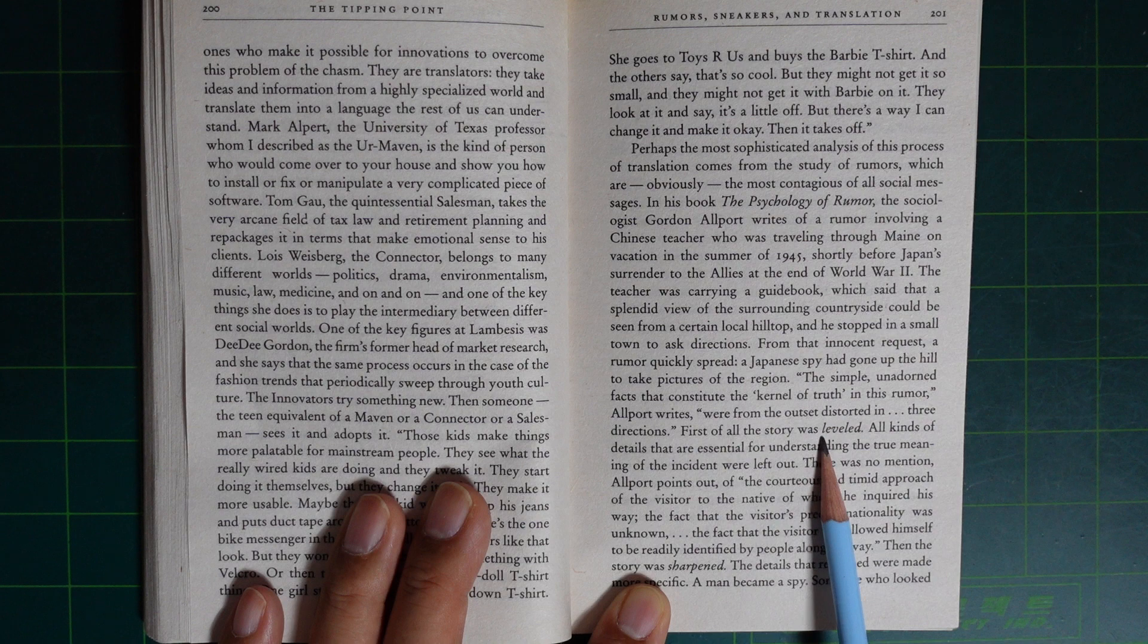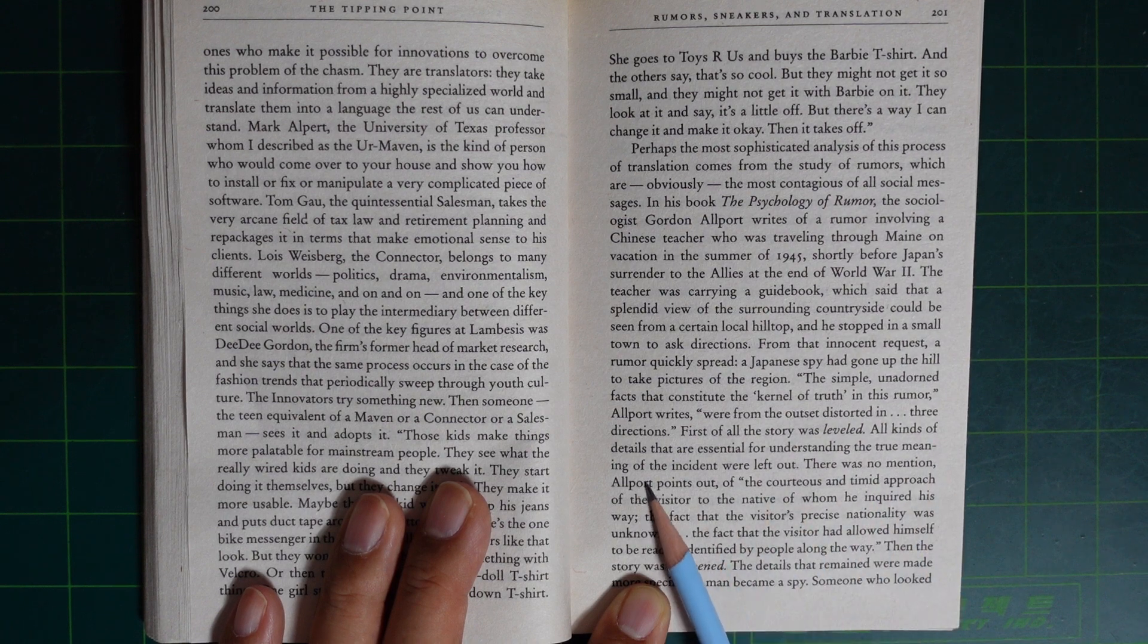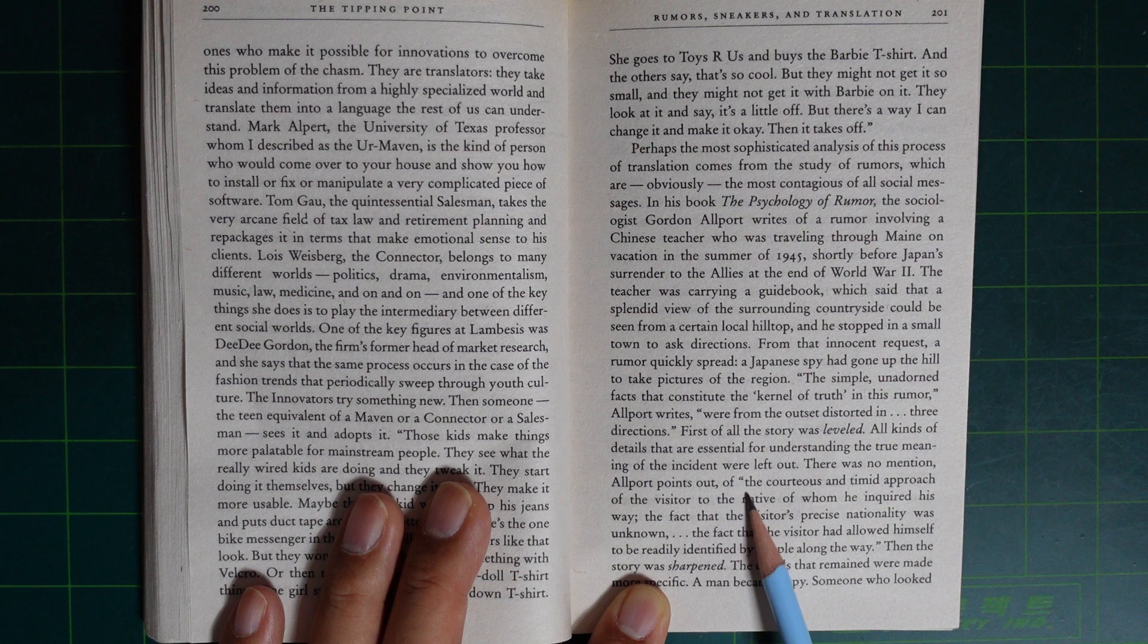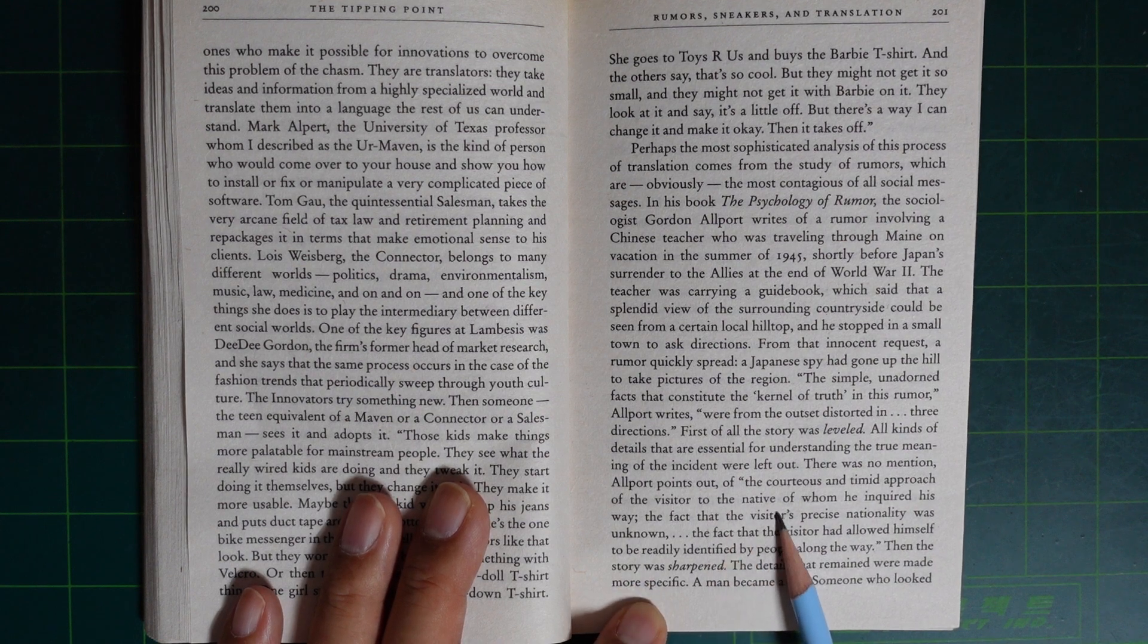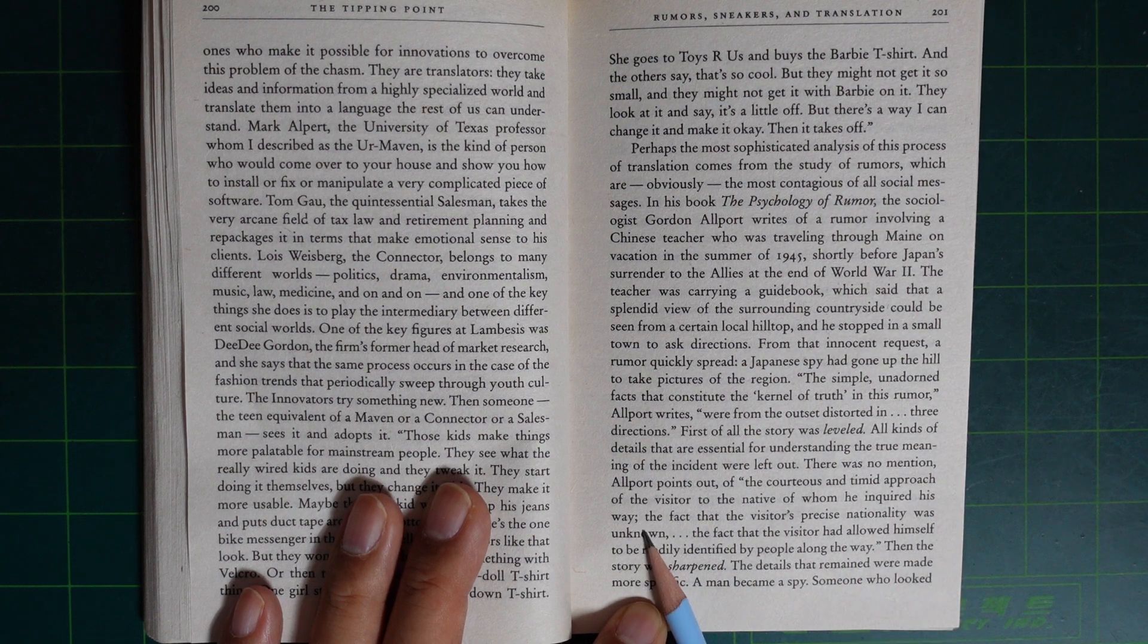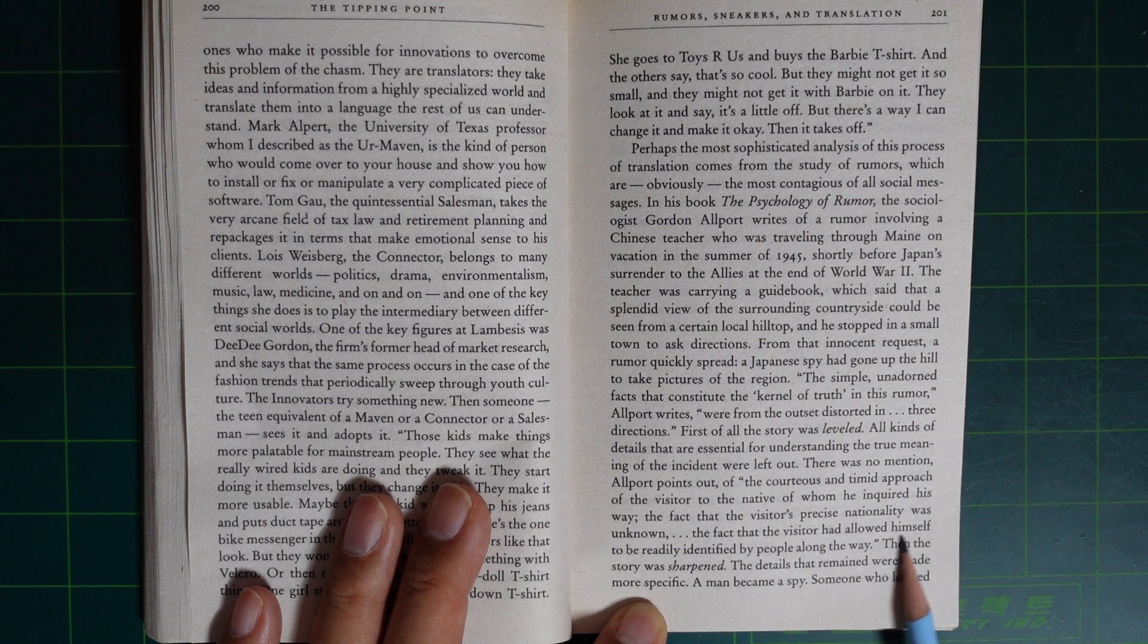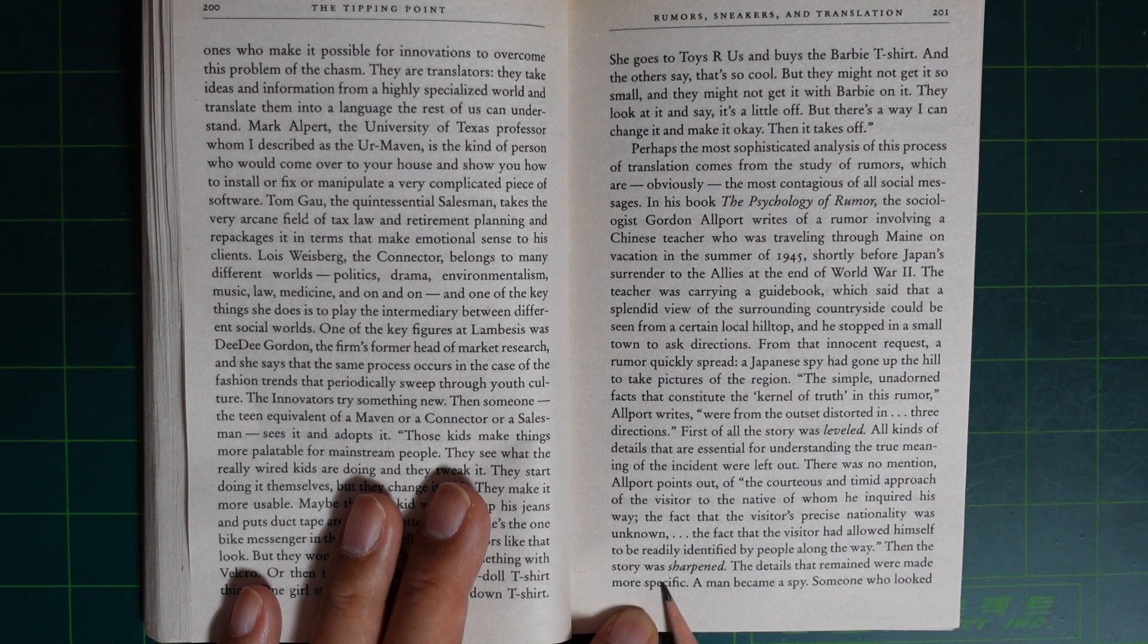The simple, unadorned facts that constitute the kernel of truth in this rumor, Allport wrote, were from the outset distorted in three directions. First of all, the story was leveled. All kinds of detail that were essential for understanding the true meaning of the incident were left out. There was no mention, Allport points out, of the courteous and timid approach of the visitor to the natives of the town where he inquired his way, the fact that the visitor's precise nationality was unknown, the fact that the visitor had allowed himself to be readily identified by people along the way. Then the story was sharpened.